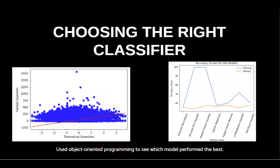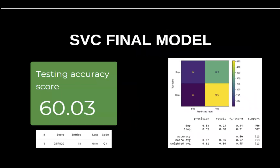I critically thought about the data using QQ plots and used object-oriented programming to create the best model possible, working with k-nearest neighbors, decision trees, and random forest classifiers. I ended up with a support vector classifier model with higher accuracy than what was achieved in the Kaggle competition for this dataset.